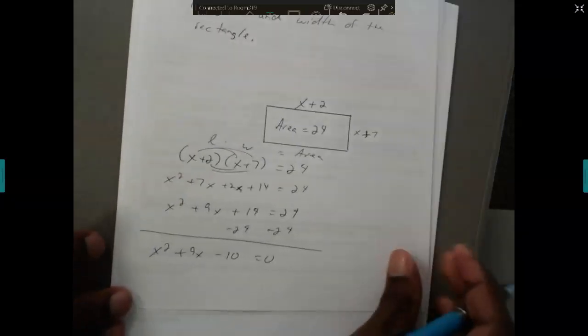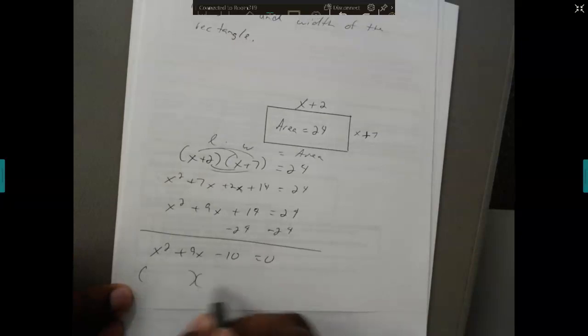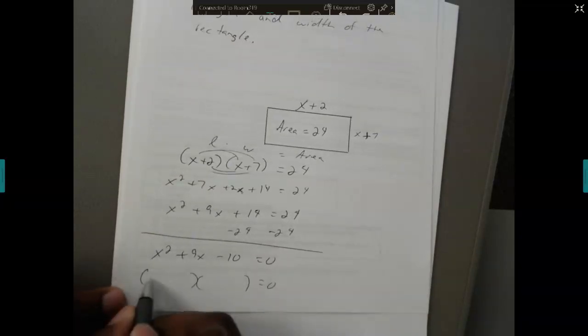This needs to be factored. We've got two binomials, x and x, unlike signs, and the numbers multiply to be 10, add to be 9, or positive 10 and 1.